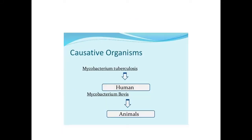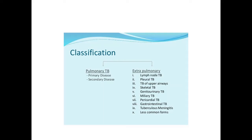The causative organism is Mycobacterium tuberculosis in human beings and Mycobacterium bovis in animals. Tuberculosis can be classified into Pulmonary Tuberculosis and Extrapulmonary Tuberculosis. Pulmonary Tuberculosis can be further divided into Primary Disease and Secondary Infections. Extrapulmonary Tuberculosis can be Lymph node Tuberculosis, Pleural Tuberculosis, TB of Upper Airways, Skeletal Tuberculosis, Genitourinary Tuberculosis, Miliary Tuberculosis, Pericardial TB, Gastrointestinal TB, Tuberculosis Meningitis, etc.